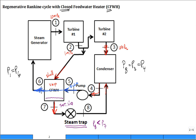Is the pressure at 2 equal to the pressure at 7, or is one higher than the other? The steam goes in, condenses, and the condensate is drained off at 7. There's no pressure difference between 2 and 7 — they're both 1 megapascal. So the steam trap drops the pressure from 1 megapascal down to 10 kilopascal.